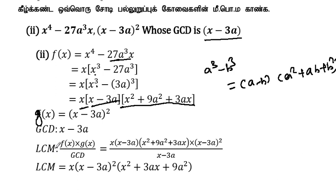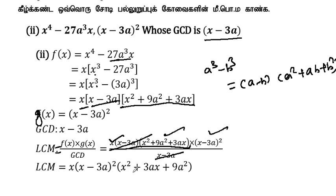The LCM formula is f(x) into g(x) divided by GCD. Substituting: x(x - 3a)(x² + 3ax + 9a²) into (x - 3a)² divided by (x - 3a). Cancelling (x - 3a), the LCM is x(x - 3a)(x² + 3ax + 9a²).